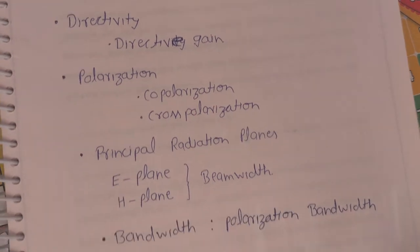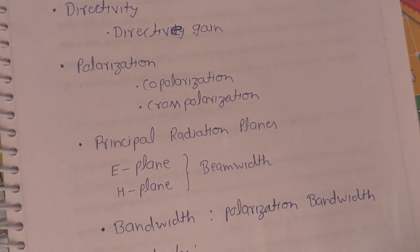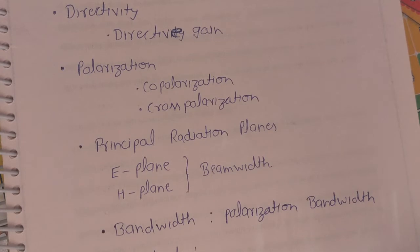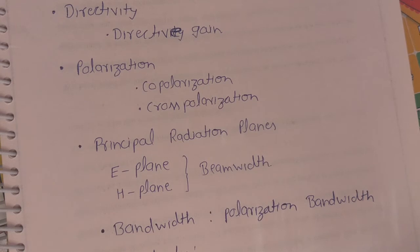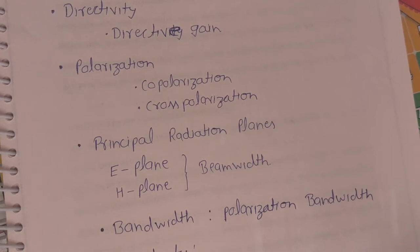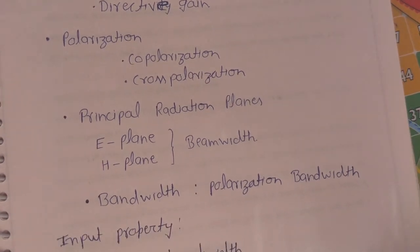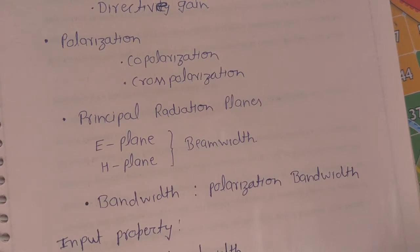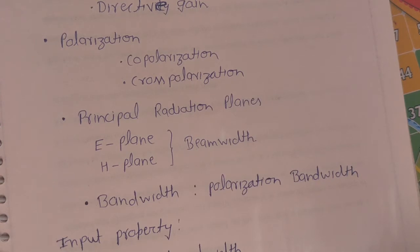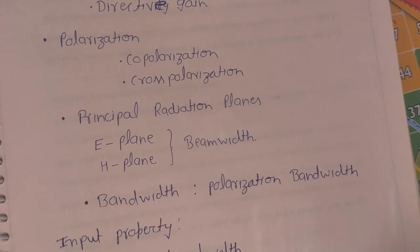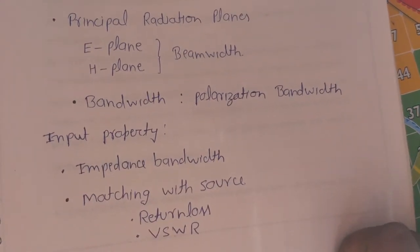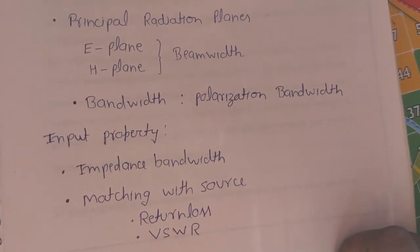We have two principal planes in the antenna radiation pattern: one is the E-plane and another is the H-plane. These are generally used to calculate the beam width of the antenna system. Bandwidth is another parameter — it gives information about the frequency range over which our antenna is linearly or circularly polarized. The input properties are defined by the input impedance and matching with the source, meaning return loss and VSWR.